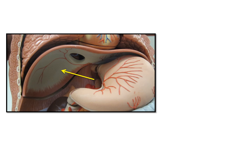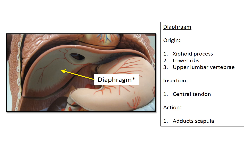Our final muscle in this lab is the diaphragm, indicated with the yellow arrow. The diaphragm originates on the xiphoid process — the inferior portion of the sternum — as well as the lower ribs and the upper lumbar vertebrae. This muscle is very unique because it inserts on itself, and that feature is called the central tendon.